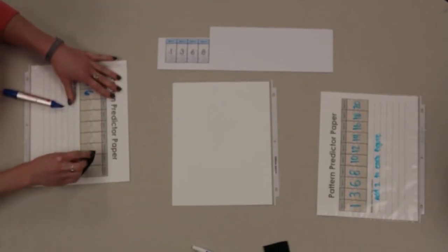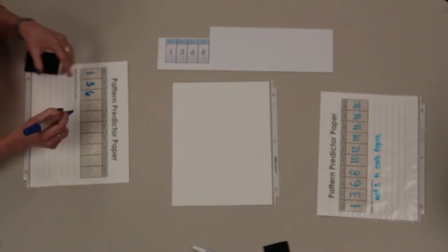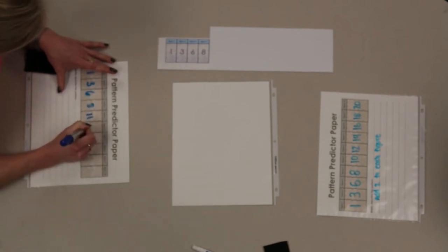In this case, the player with a pattern 1, 3, 6, 8, 10, 12, 14, 16, 18, 20 isn't sure that their pattern is right, so they want to see the next figure.